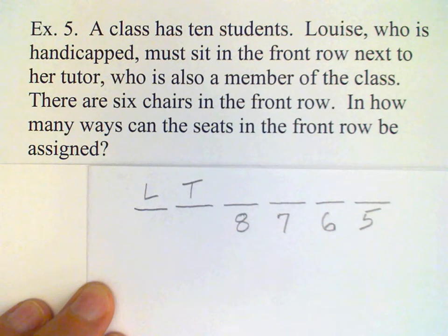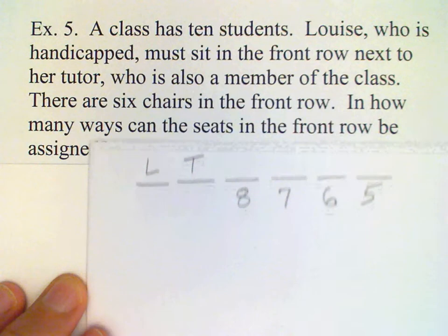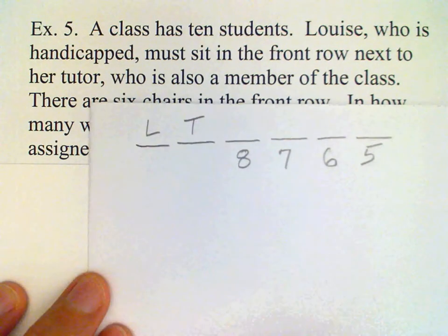And then the fundamental counting principle would tell us that we would need to multiply these numbers together to get the total. But of course, this is not the only possibility for Louise and her tutor.